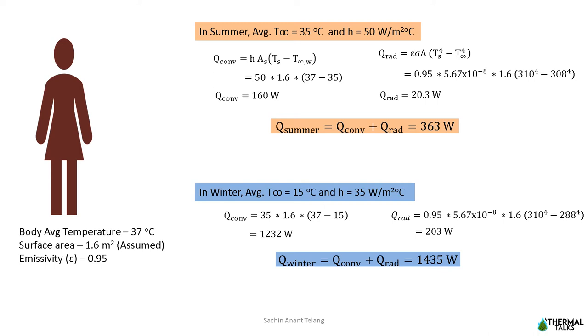It is very important to understand from the surface of the human body both convection and radiation is taking place. What about conduction here? There is no conduction but there is internal heat generation within the body, so because of that the average body temperature is 37 degrees Celsius.